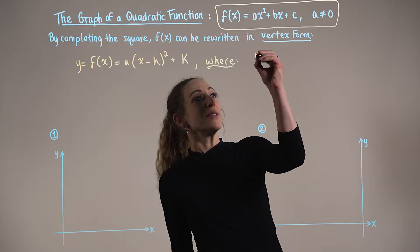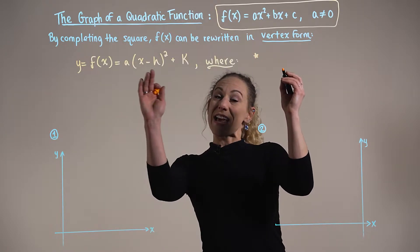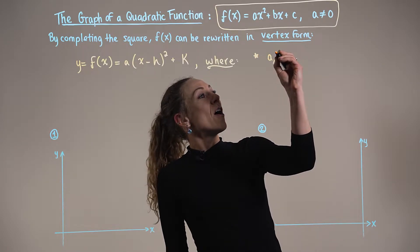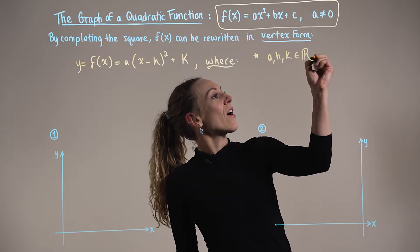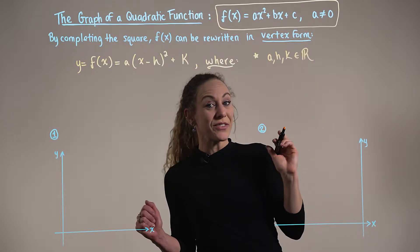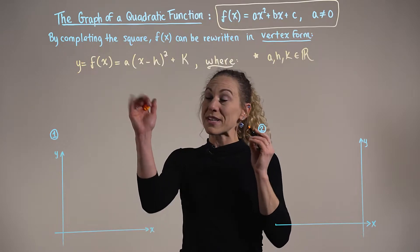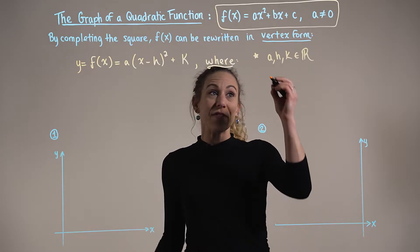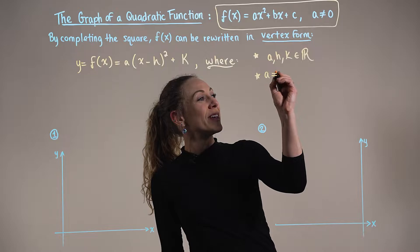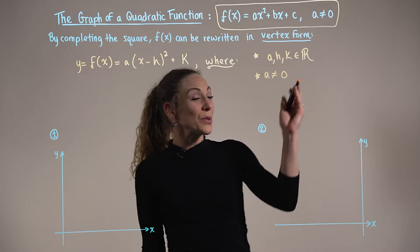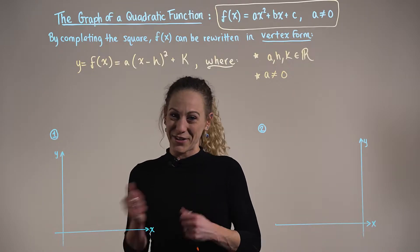The constants a, h, and k are scalars, or constants — they're real numbers. And again, a is our leading coefficient because it's attached to the variable of degree two. We know that a cannot be zero, otherwise we'd have a linear function.